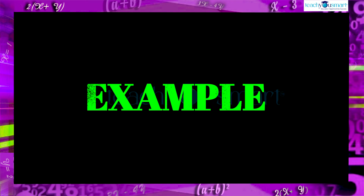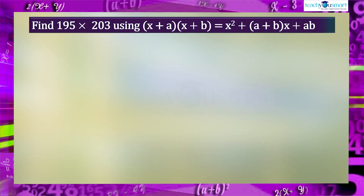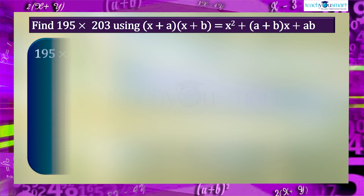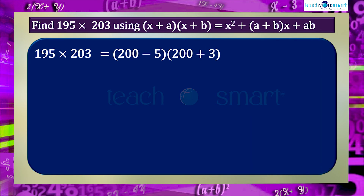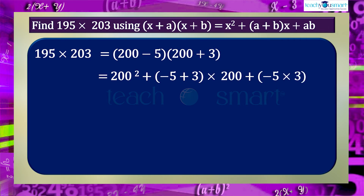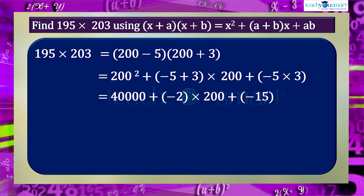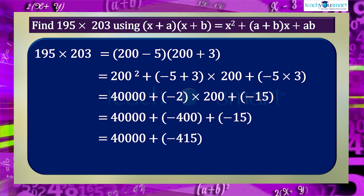Let's take another example. Find 195×203 using (x+a)(x+b) = x²+(a+b)x+ab. We can write 195×203 as (200-5)(200+3). That is: (200-5)(200+3) = 200²+(-5+3)×200+(-5×3) = 40,000+(-2)×200+(-15) = 40,000-400-15 = 39,585.